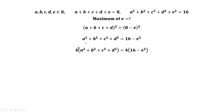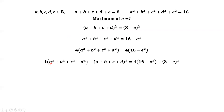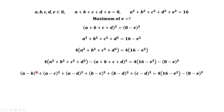From this result, subtract the first result. We have 4 times A squared plus B squared plus C squared plus D squared, minus A plus B plus C plus D squared. The right-hand side is 4 times 16 minus E squared, then minus 8 minus E squared. Simplifying the left-hand side using the completing the square method, we can see it equals A minus B squared plus A minus C squared plus A minus D squared plus B minus C squared plus B minus D squared plus C minus D squared, which equals the right-hand side.